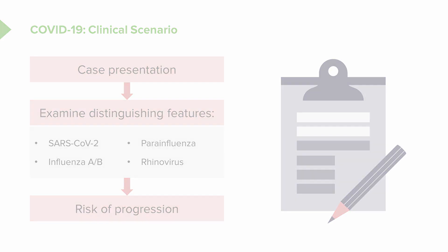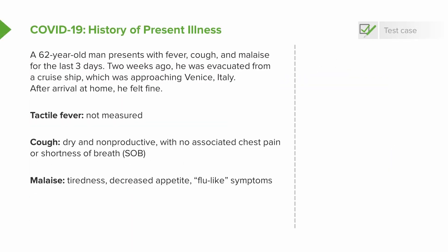At the end of the presentation we'll also look at what factors precipitate a risk of progression. We'll start with our case: Mr. Lecturio. He is a 62-year-old male who comes to us in clinic with fever, cough, and malaise for three days. Importantly, two weeks ago he was evacuated from a cruise ship approaching Venice, Italy due to a cluster of cases, but after arriving back in the states he was fine until just three days ago.